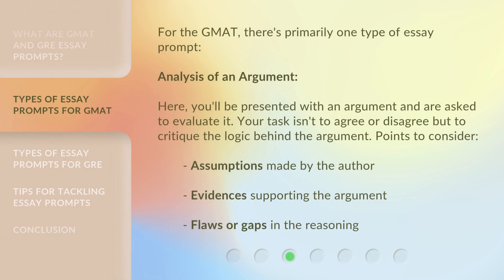For the GMAT, there's primarily one type of essay prompt: Analysis of an Argument. Here, you'll be presented with an argument and are asked to evaluate it. Your task isn't to agree or disagree, but to critique the logic behind the argument. Points to consider include: assumptions made by the author, evidence supporting the argument, and flaws or gaps in the reasoning.